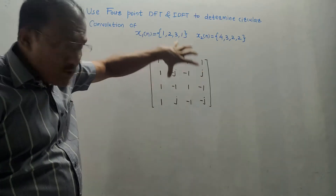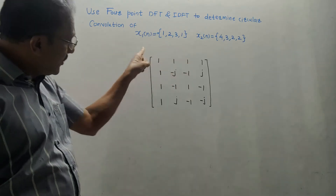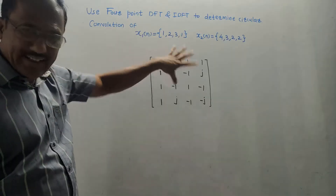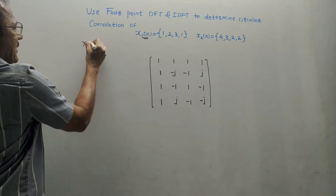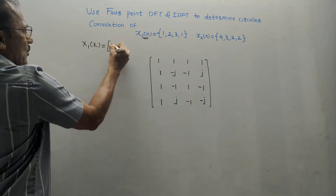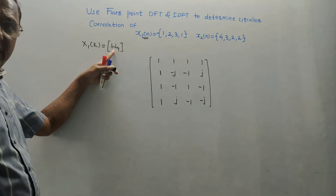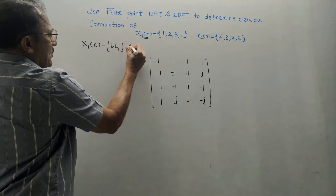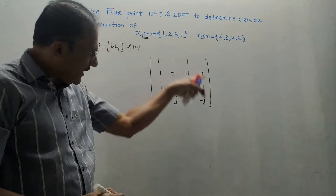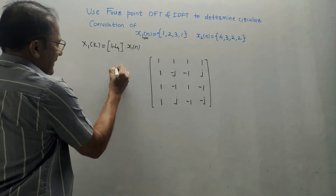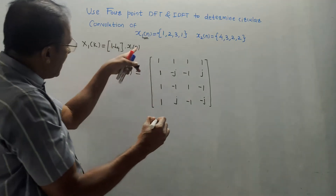This is the matrix of W4. If you haven't watched the video on calculation of DFT, do watch it. You need to memorize this matrix — it's very simple. First, I will be calculating DFT of X1(N), denoted by X1(K). The formula is: X1(K) = [W4] × X1(N), where X1(N) is written as a column matrix.